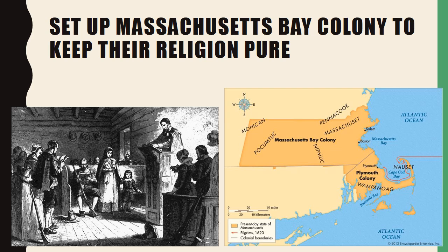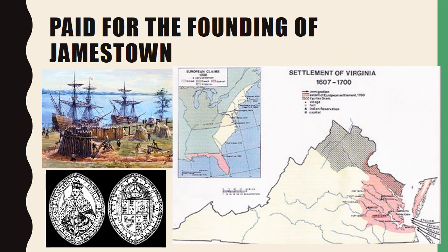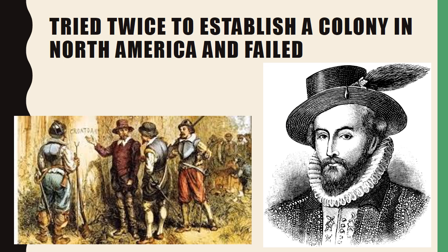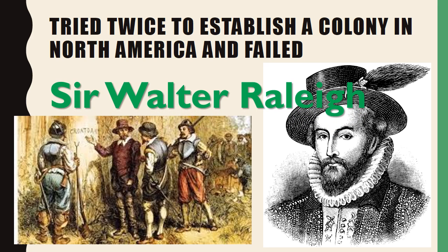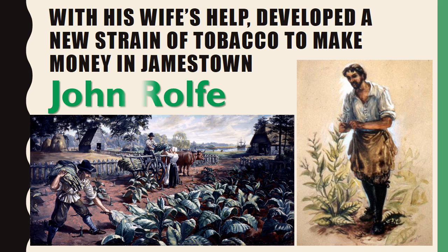Who set up Massachusetts Bay Colony to keep their religion pure? This is a group of people, the Puritans. Who paid for the founding of Jamestown? This would be the Virginia Company of London or the London Company. Who tried twice to establish a colony in North America and failed? Sir Walter Raleigh. Who, along with his wife's help, developed a new strain of tobacco to make money in Jamestown? That would be John Rolfe.